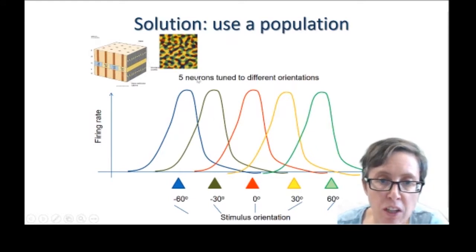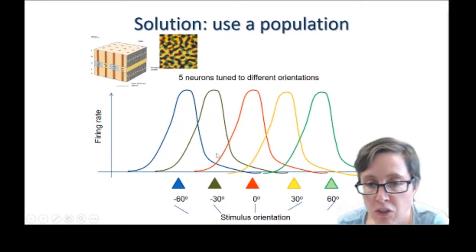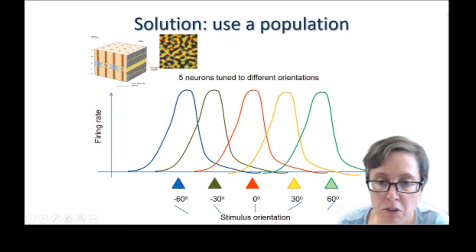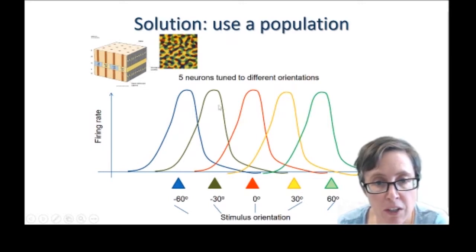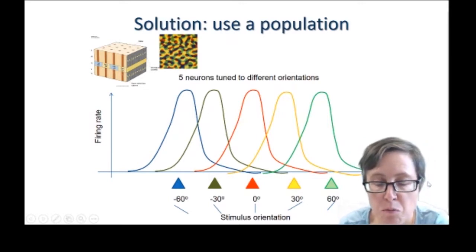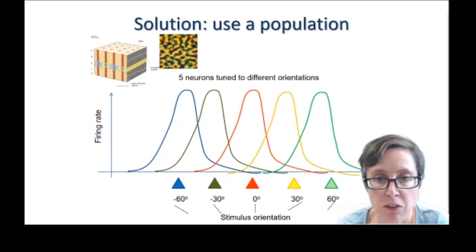And I've just taken five of those neurons and sketched out their orientation tuning curve. So they're all tuned to different orientations. And these little triangles and the colors represent the neuron and its corresponding tuning curve. So now what the brain has is not the output of any one neuron but of all five of these neurons together.